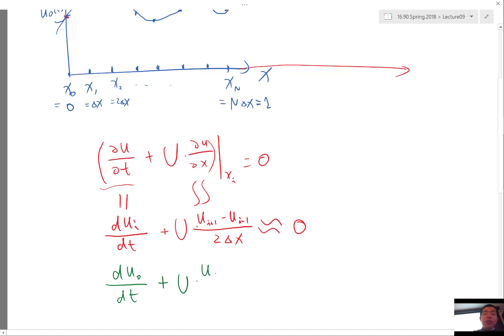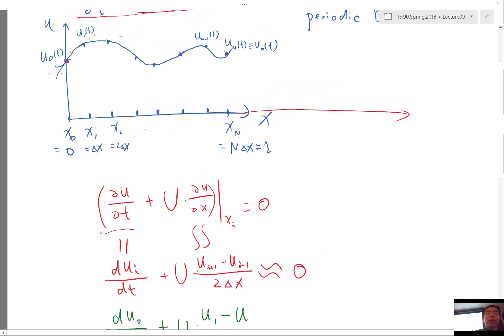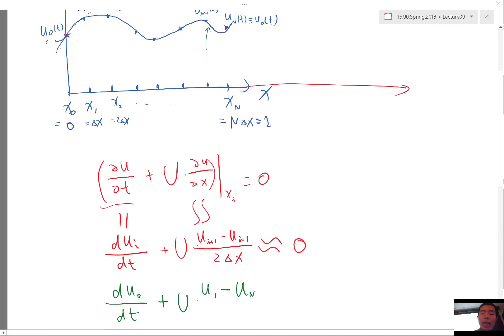So at U0, what I get is Ui plus 1, which is U1, then minus Ui minus 1, which is U minus 1. But what is U minus 1? What is the point to the left of U0? It's actually the same as this point, right?